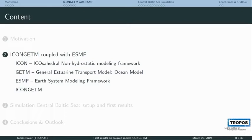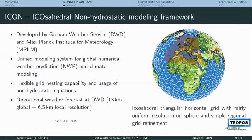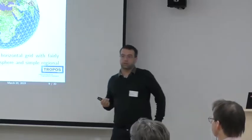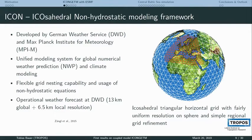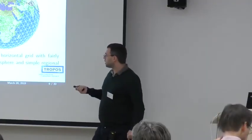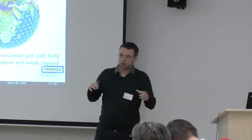Let's go into the details of the models. ICON is a model developed by the German Weather Service and the Max Planck Institute for Meteorology in Hamburg. Its main purpose was to develop a unified model that allows climate research, weather forecasting, and weather research — combining all of these in one major tool. They also introduced a flexible grid nesting capability, which allows regional nesting for higher resolutions. The German Weather Service currently uses it for a global and European domain and will soon, hopefully, replace the German domain with an even higher-resolution nest.